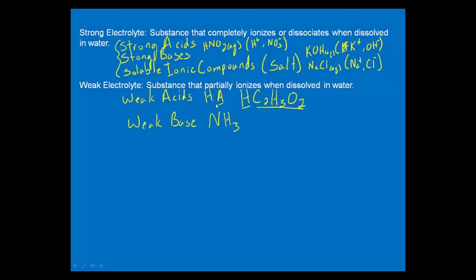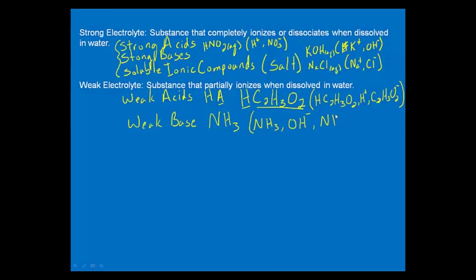Our poster child for weak bases is NH₃. When you see a weak acid like acetic acid in solution, what's floating around? Since it's a weak acid, some of the original acid is floating around, along with the hydrogen ion and the acetate. For a weak base, the original molecule is floating around, hydroxide is floating around, and — since that base reacts with water to make hydroxide — the other ion formed, which in this case is ammonium, is also floating around.